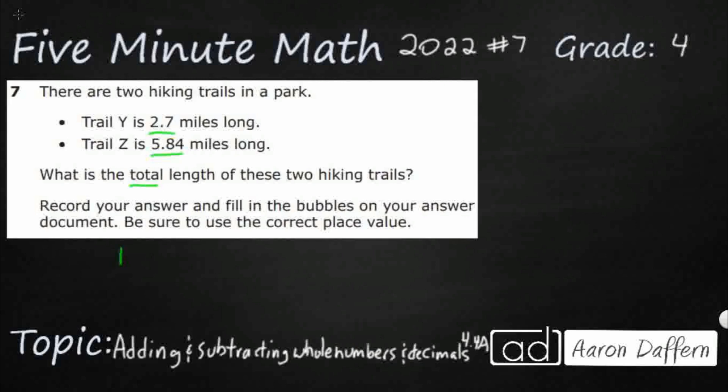Well, it seems like if I were to draw a strip diagram, I'm going to draw a part-part-whole specifically. It looks like it's going to be pretty straightforward. So let's see if I can do that correctly. So I've got my total. That's the question. I don't know what my total is. That always goes in the top. And it looks like I've got two parts. And Trail Y is a little bit shorter. So I'm going to put 2.7 right there. I'm going to put 5.84 right there.